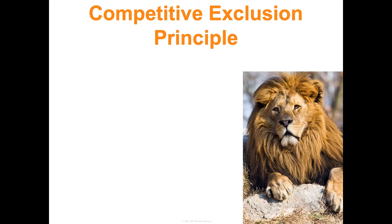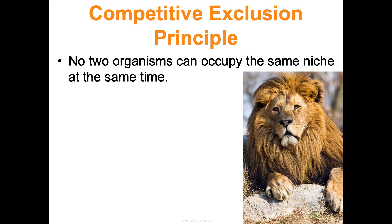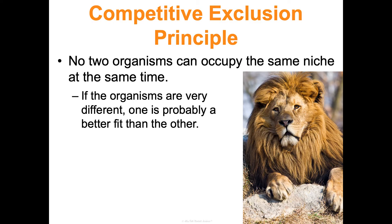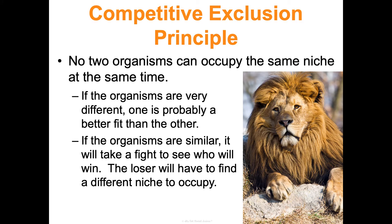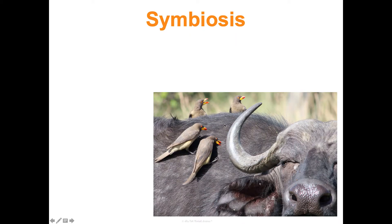The competitive exclusion principle states that no two organisms can occupy the same niche at the same time. If two very different organisms try to do that, one will naturally be a better fit. But if they're really similar, it results in competition to see who wins the niche — the loser dies or must find a different niche. A great example is The Lion King: Mufasa and Scar fight to be king of the pride; Mufasa wins. Then Simba and Mufasa compete for that same niche again, and Mufasa ends up excluded after the competition.